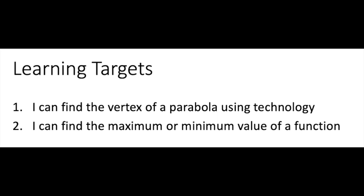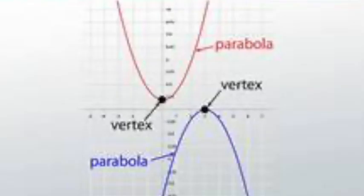All right, welcome to Project Two where we're going to be learning how to optimize things. Optimization means that we're going to need to be able to find the vertex of a parabola and use that vertex to find the maximum or minimum value of a function.